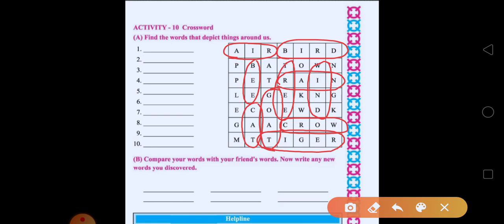So, write down these words in a blanks. Now, B. Compare your words with your friends' words. Now, write any new words you discover it. Means, Aapke jo words hai, woh aapke friends ke saath compare karne hai. And write down more new words.